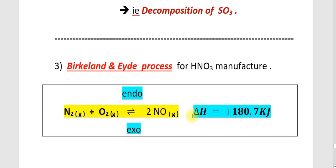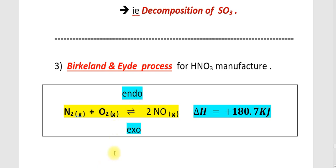The next process is the Ostwald process for HNO3 formation. The reaction is: N2 plus O2 reversible to form 2NO. Here, delta H is positive, so the forward reaction is an endothermic reaction and the reverse reaction is the exothermic reaction.